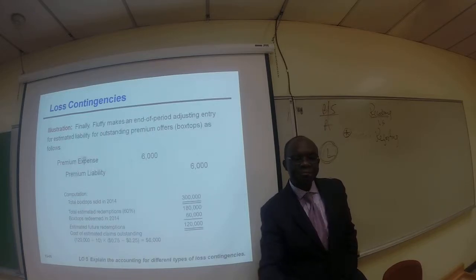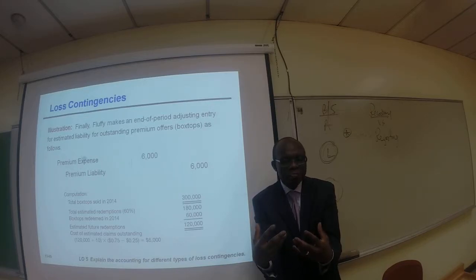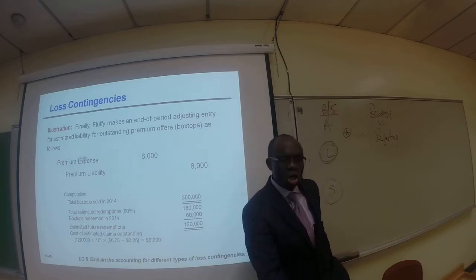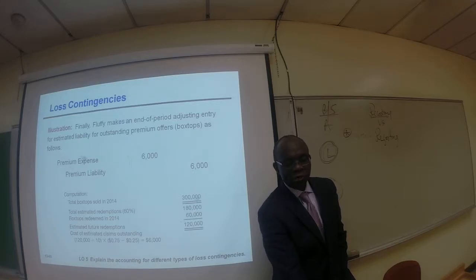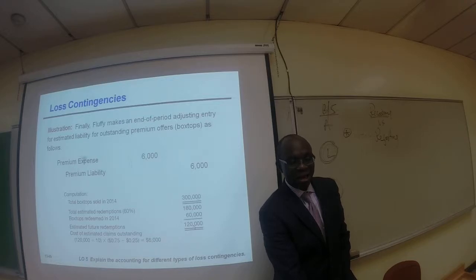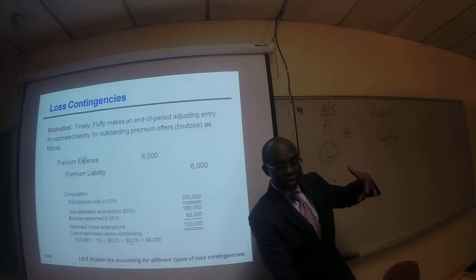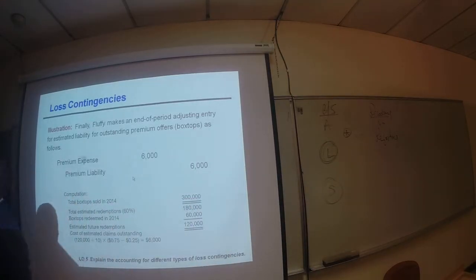Here is the year-end adjustment. Total box tops sold in 2014 were 300,000. We estimate 60% will be redeemed based on history, so 60% of 300,000 equals 180,000. Since 60,000 were already redeemed, there are 120,000 estimated future redemptions. We divide 120,000 by 10 and multiply by ($0.75 cost of the mixing bowl minus $0.25 paid by the customer), giving us $6,000. We debit premium expense $6,000 and credit premium liability $6,000.